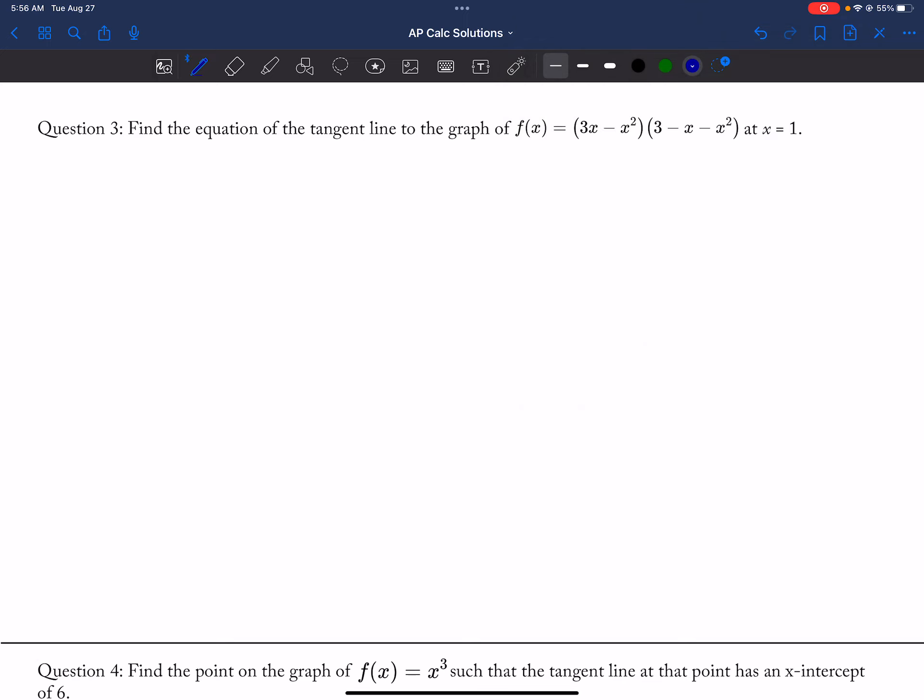Tangent line again. 3 minus x minus x squared times 3 minus 2x plus 3x minus x squared and negative 1 minus 2x. So I want this at 1. You know, I don't have to simplify this.